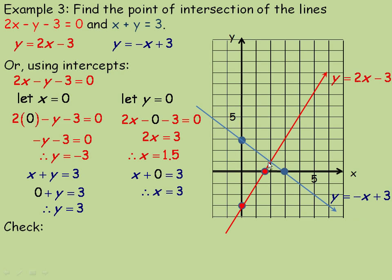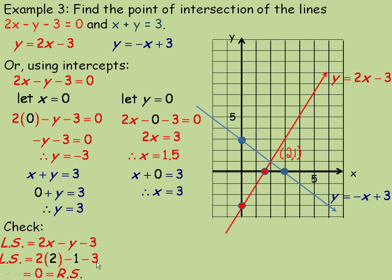Now it looks like the two lines cross here at the point (2, 1). We're going to check to make sure it is exactly (2, 1) in both equations. For the first equation, the left side is 2x minus y minus 3. Substituting x equals 2 and y equals 1: 2 times 2 minus 1 minus 3 gives 4 minus 1 minus 3 equals 0. Since we got 0, which is the right side of the equation, the point (2, 1) satisfies that line.